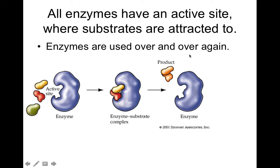Enzymes are used over and over again. Think of enzymes like your house key — your house key can be used over and over again, and it's specific to your house lock. You can't go to your neighbor's house and unlock their door. Just like enzymes are specific to their reactions, your house key is specific to the lock it will work on. That's why there are thousands of different enzymes, and that's why there are thousands of different keys. One key opens one lock, just like one enzyme acts on one reaction. And like your key, you don't use it and then it's ruined — you use it over and over again, just like an enzyme.